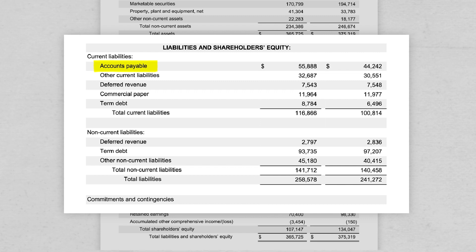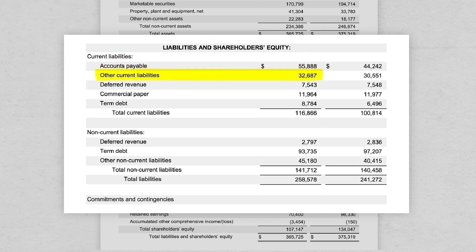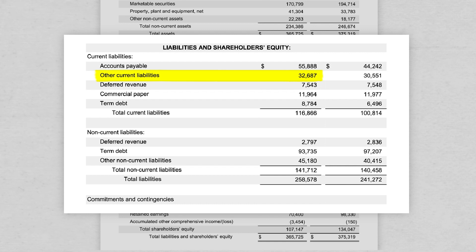For Apple, as of September 29, 2018, if you add up all the unpaid invoices, you get $55,888,000,000. The next line item is other current liabilities, and Apple owes about $32,687,000,000 here.